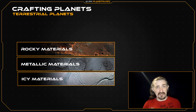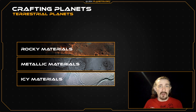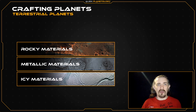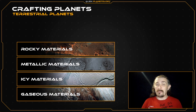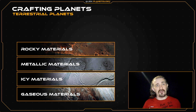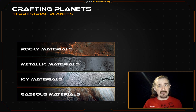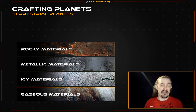Then there are icy materials, which refers to water in both its solid icy state and its liquid state, as well as other ices such as methane ice, ammonia ice, and carbon dioxide ice. And finally, there are gaseous materials, which primarily refer to hydrogen and helium, but can sometimes refer to other gases such as nitrogen and carbon dioxide as well. Each of these materials has its own associated average density, and a planet's mean density is a reflection of the probable ratio of the materials that make it up.